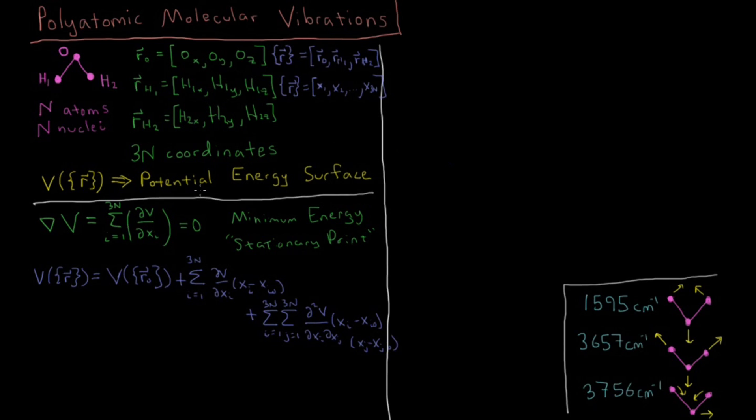But there are some simplifications we can make. The zero of energy is arbitrary, so we can just set this equilibrium energy to be zero. We already said we're at a minimum energy geometry, so the gradient with respect to all dimensions is zero as well. And let's just go ahead and define the equilibrium position of any of these coordinates to be zero as well. So that just leaves us with this second order term here that we're mainly looking at.